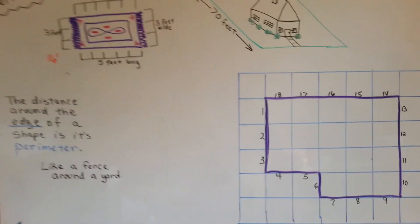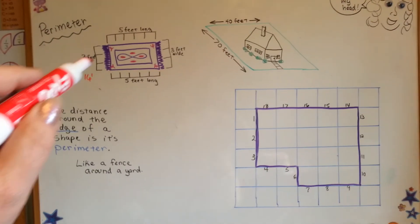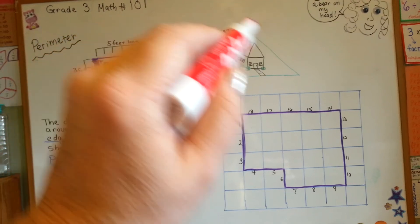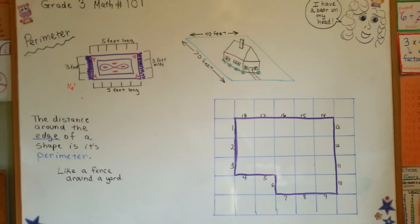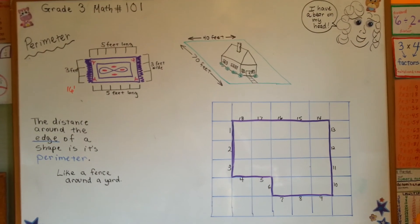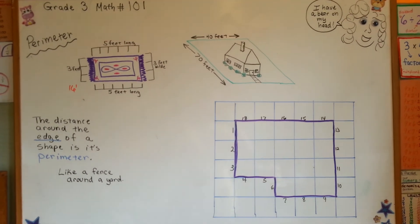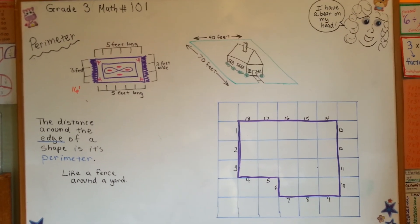Remember, perimeter is the measure of going around the outside edge of the shape to find out how long it is. See you next video. Keep up the good work.